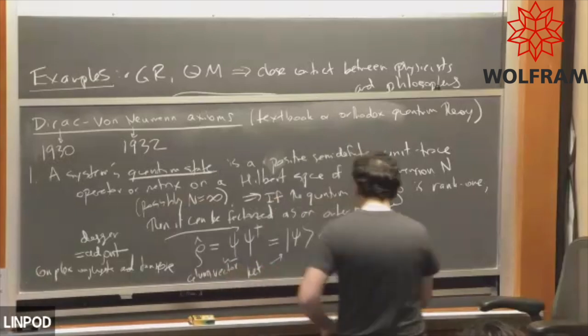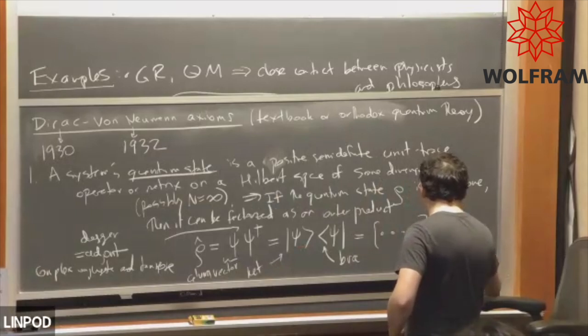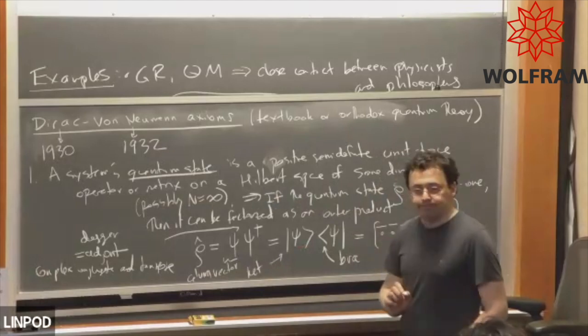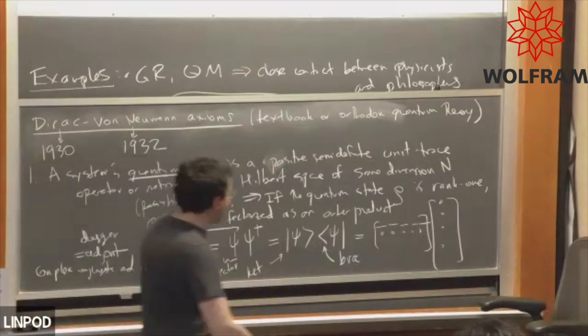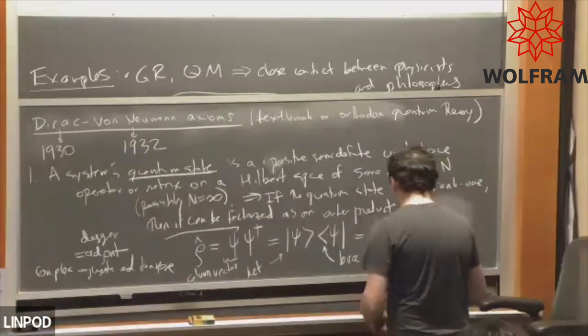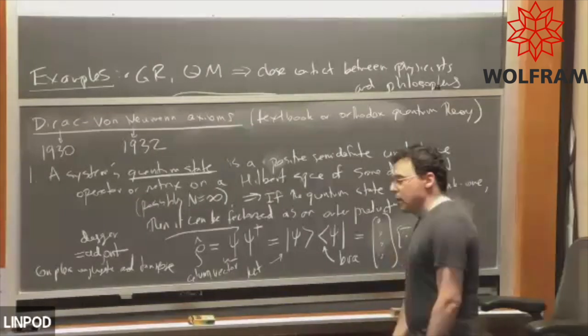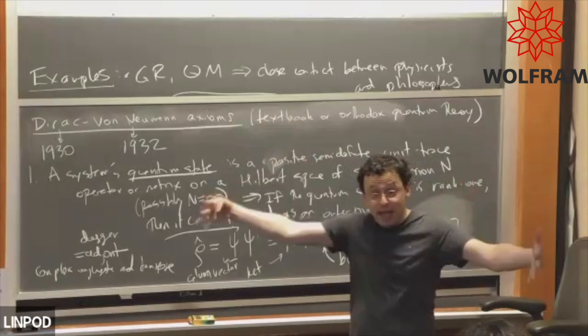So what this is really saying is we're expressing this thing as a row vector multiplied by a column vector that is the same vector except that we have complex conjugated all of the entries. This is ρ the other way. Always do this: column vector of course, column vector first. Okay, column vector.